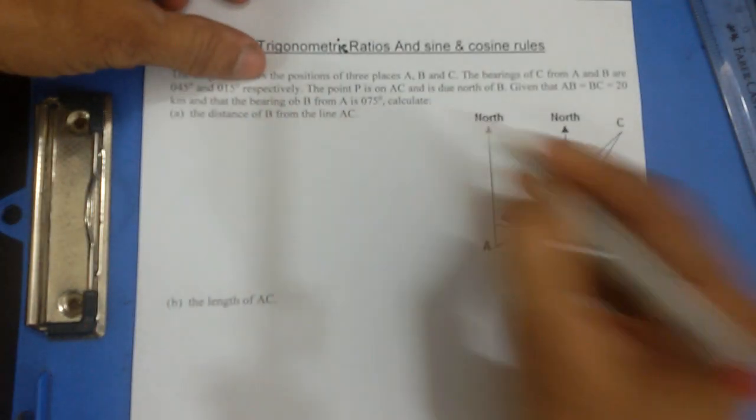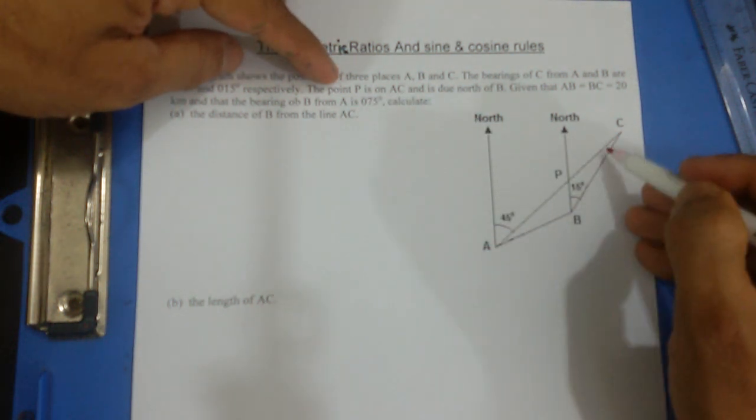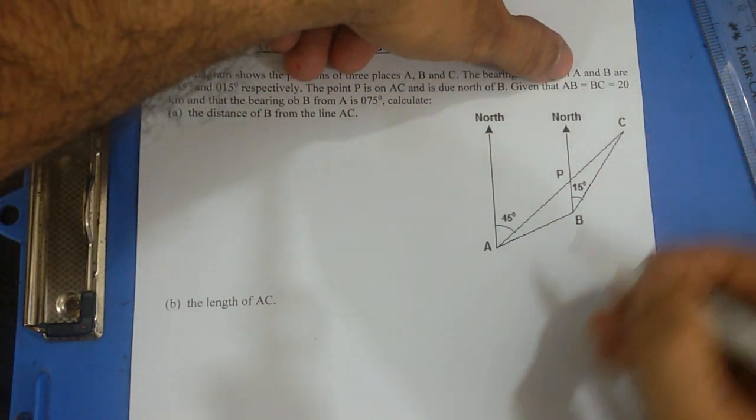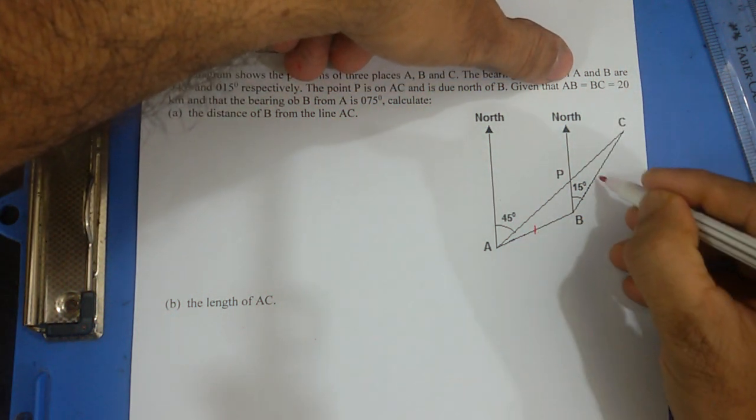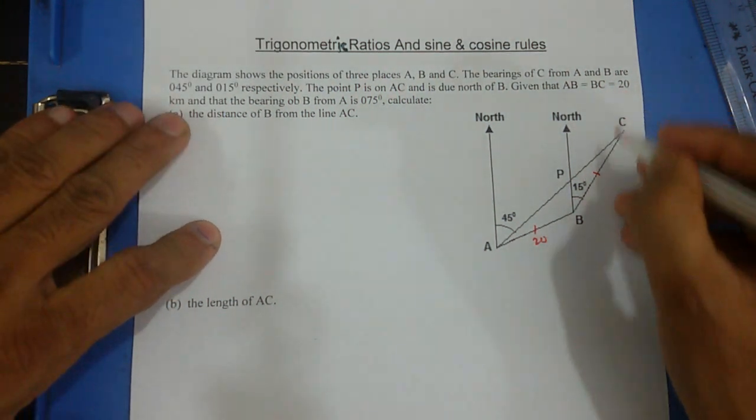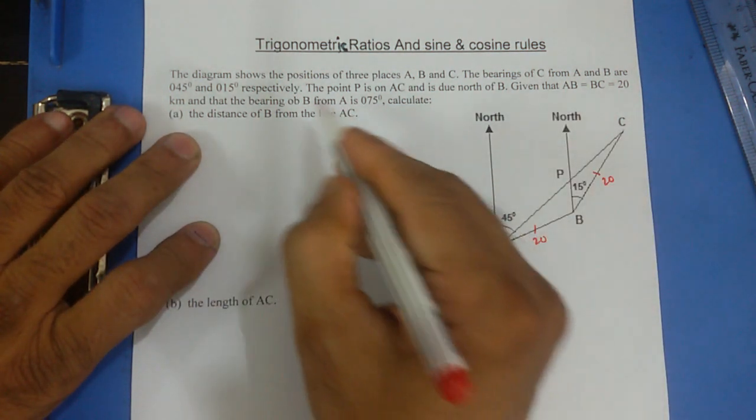And C from B is 15 degrees respectively. The point P is on AC, due north of B. Given that AB equals BC, just mark that AB equals BC. They are 20 kilometers each. Whatever the information is given, write it down.